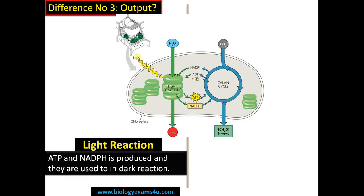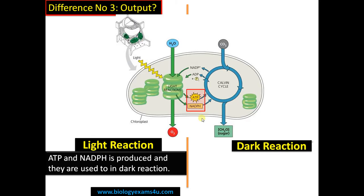Difference number three regards the output. In light reaction, the energy from sunlight is received by pigment molecules and that energy is converted into chemical energy in the form of ATP and NADPH. Whereas in dark reaction, this energy is used in the Calvin cycle for fixing carbon dioxide to carbohydrate or glucose.